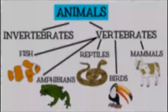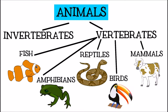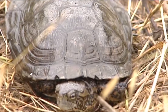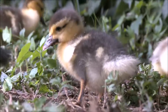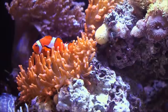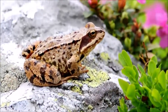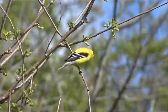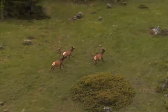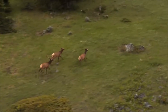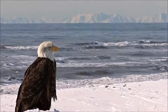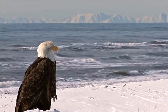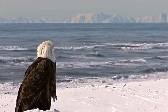The animal kingdom is classified into many different groups based on animal characteristics to help us understand the world around us. Saying an animal is an invertebrate, a vertebrate, a fish, amphibian, reptile, bird, or mammal tells us many things about it that can help us understand its needs and behavior. I hope you enjoyed learning about animal classification today. Goodbye till next time!